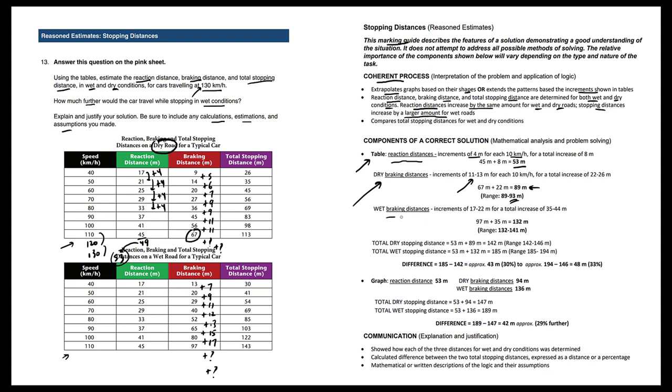Now let's take a look at the wet braking distances from 40 km an hour to 50 km an hour. We go from 13 to 20 meters. So that's an increase of 7, and then as we keep going, we increase by 9, 11, 12, 13, 15, 17, and the pattern continues.